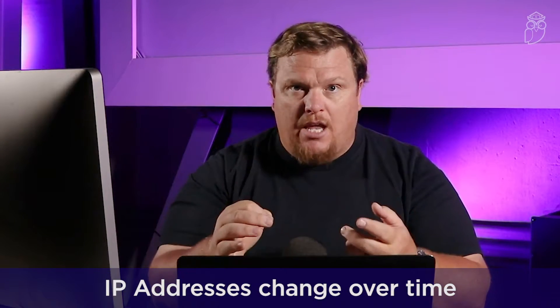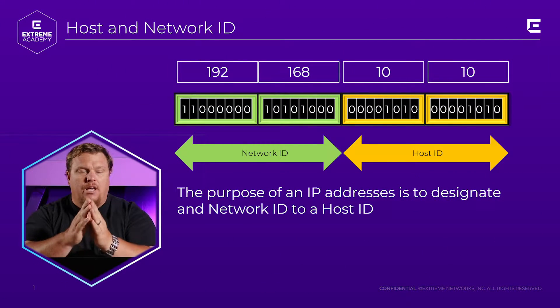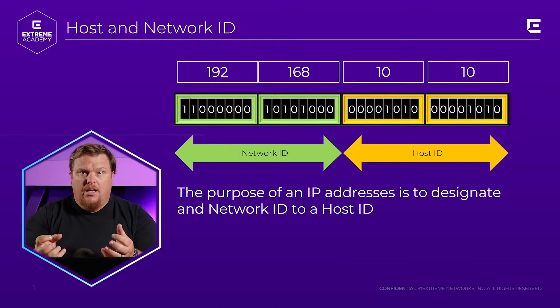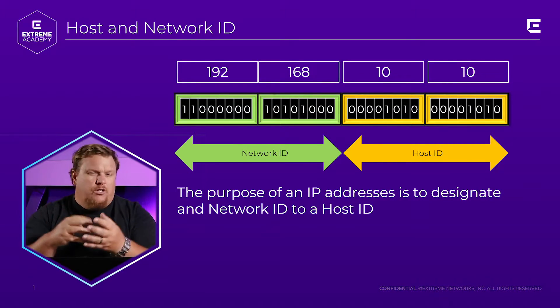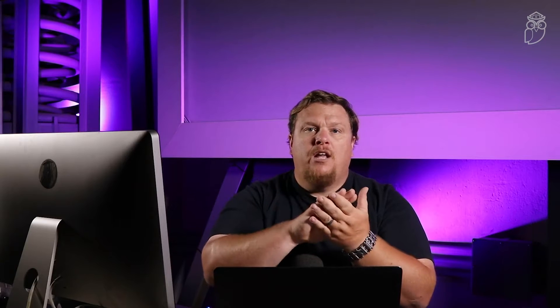So what does an IP address actually do? It can be dynamic — it not only can be, but most of the time is dynamic. It actually does change over time. But specifically, the purpose of an IP address is to designate a network ID versus something called a host ID. Let's just throw out a sample IP address: 192.168.10.10. We could say the 192.168 is the network ID, and the .10.10 — the last half of it — is the host ID.